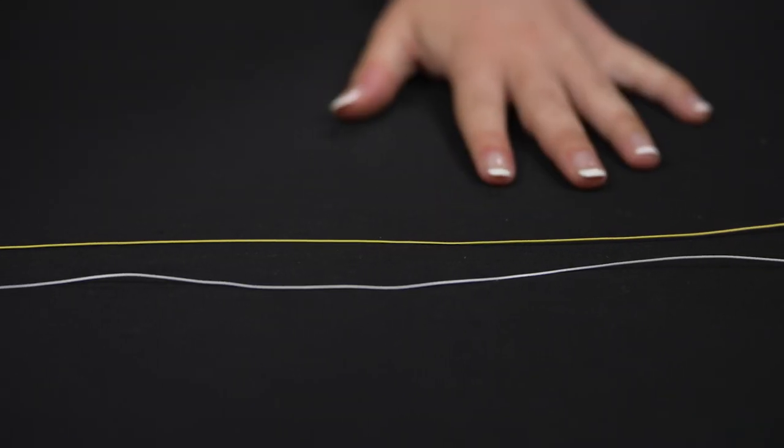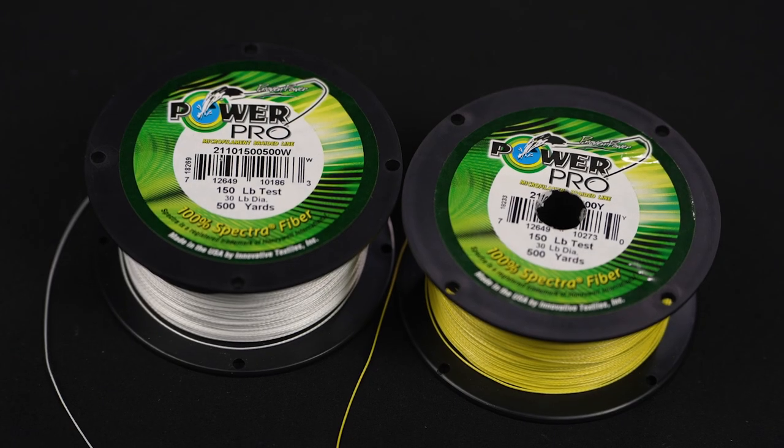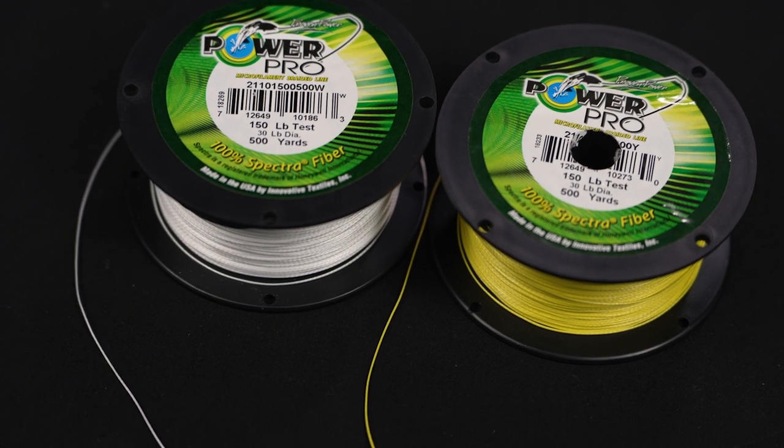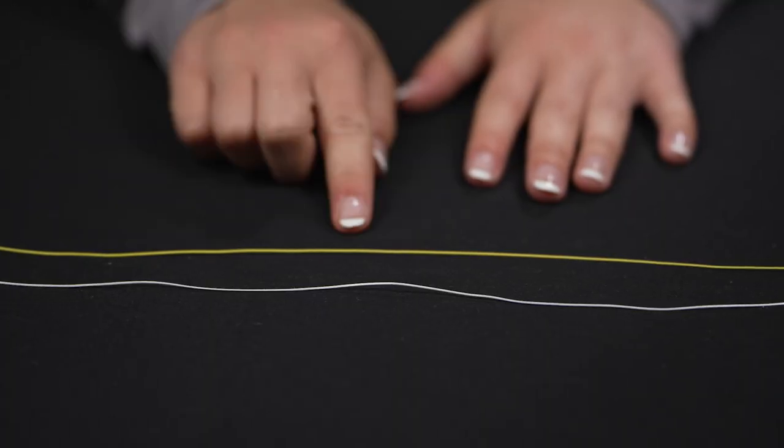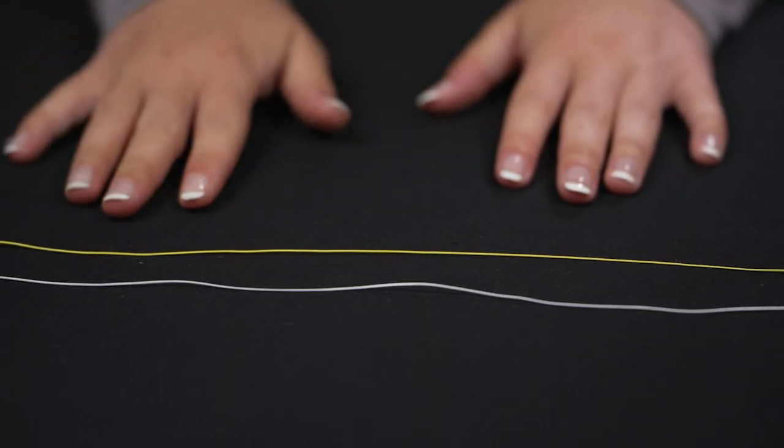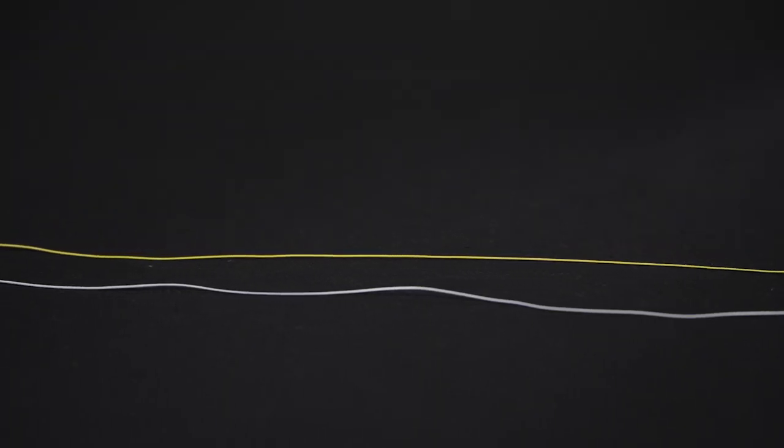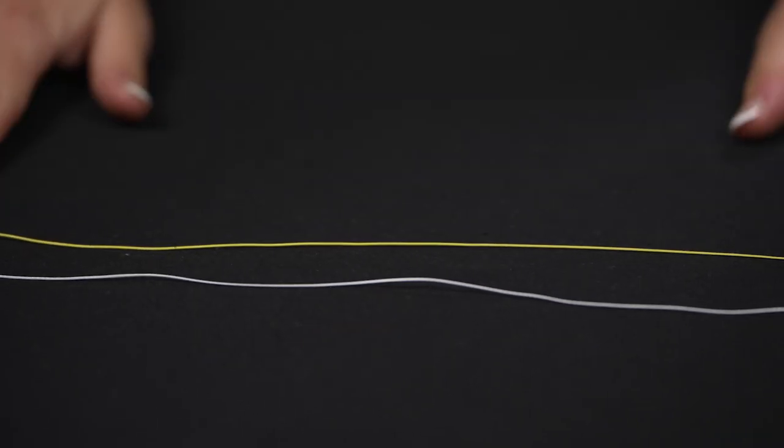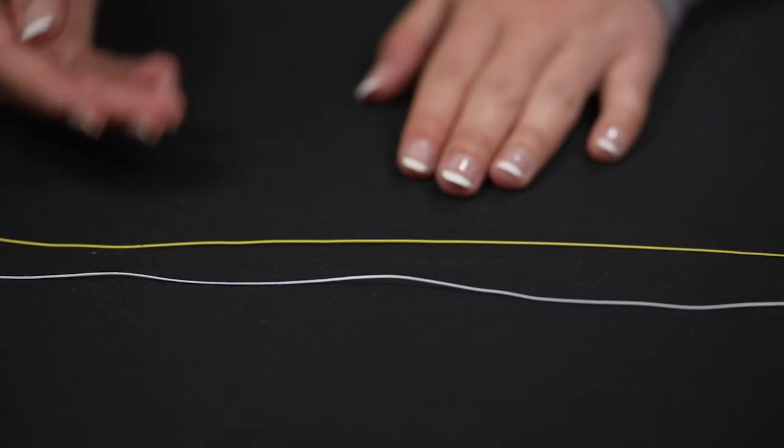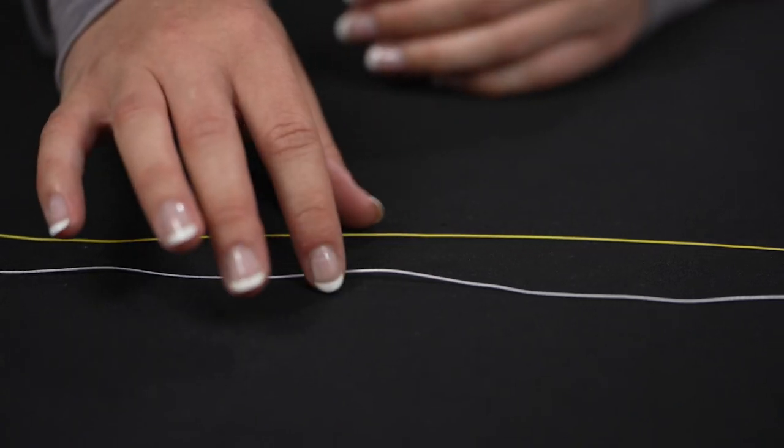Okay guys, so for demonstration purposes, we're going to be using a 150 pound braid in the colors yellow and white. Our white is going to represent our mono or fluorocarbon and our yellow is going to represent our braid. So let's go ahead and lay this out on the table. I recommend if you're doing this for the first time to find a flat surface to do this on so that you can really visually see what you're doing. That's going to really help you get started.